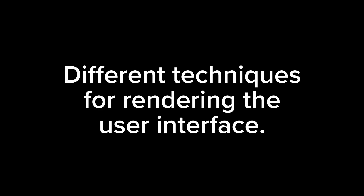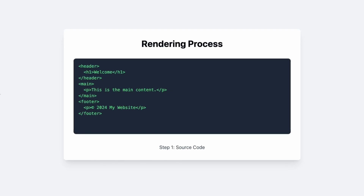You've probably heard terms like SSG, SSR, ISR, and CSR. These are all different kinds of rendering techniques available in Next.js, and by the end of this video you will have a very clear idea about all of these rendering methods and when to use each of them.